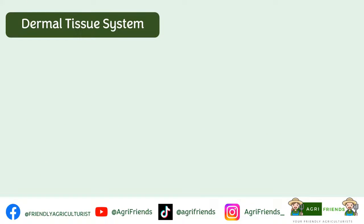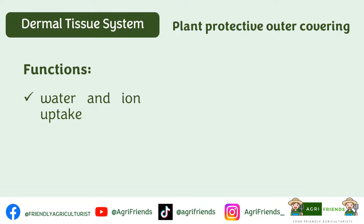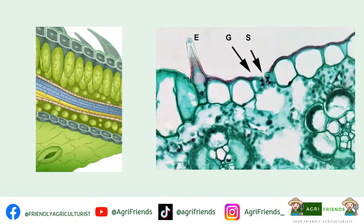The dermal tissue system is the primary outer protective covering of the plant, since it is the layer in contact with the environment. It is a single layer of thick epidermal cells without chloroplasts. The function of dermal tissue, aside from protection, is that it facilitates water and ion uptake in the roots and regulates gas exchange in the leaves and stem. Types of dermal tissues include epidermal cells, stomata, lenticel cells, and trichomes. In this figure, this is the trichome, this is the guard cells, the pore is the stomata.